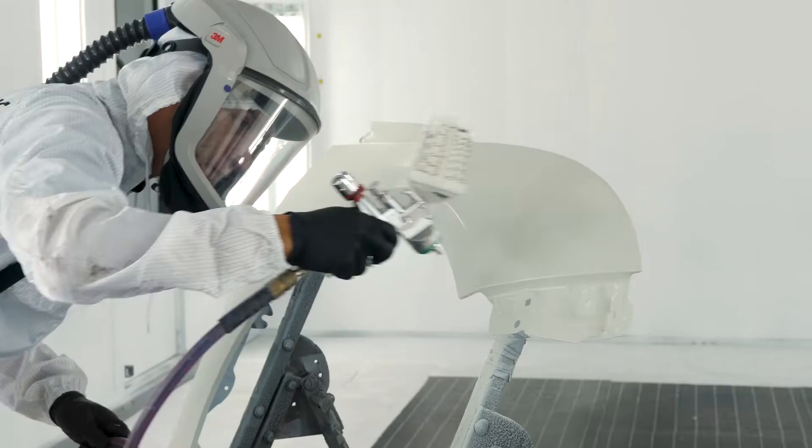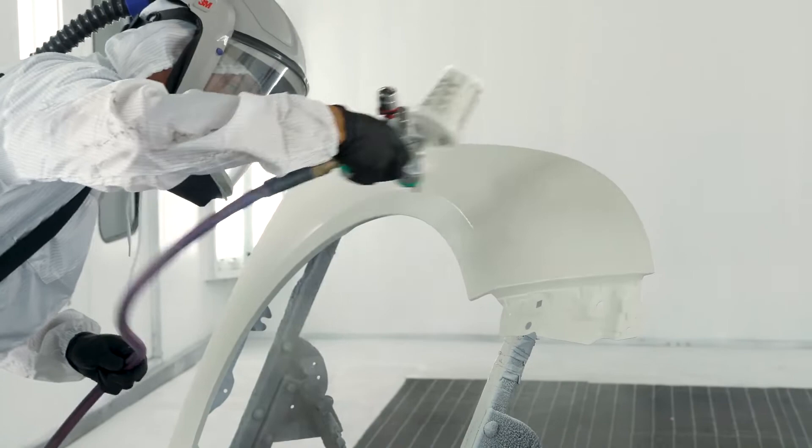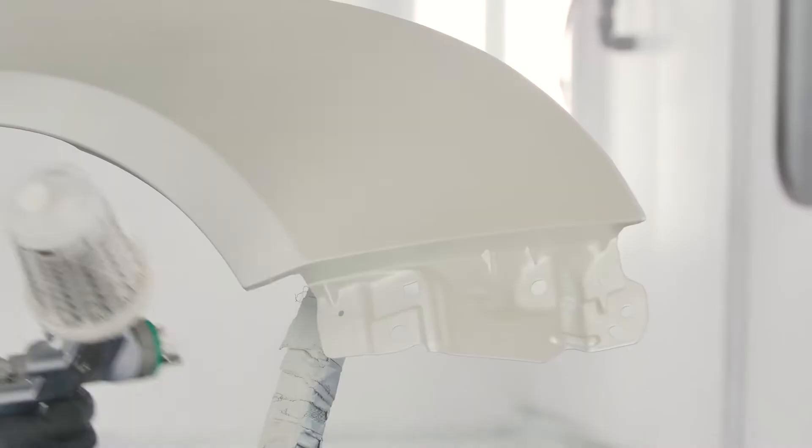After you've sprayed the repair area with base coat color, allow to flash between five to ten minutes at 77 degrees Fahrenheit surface temperature. Flash times will vary due to temperature, humidity, and film thickness.